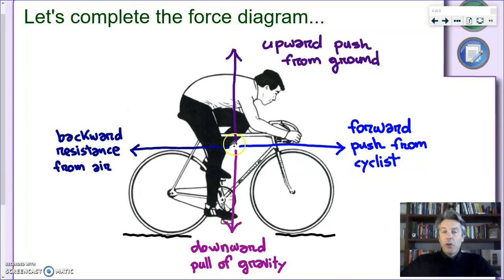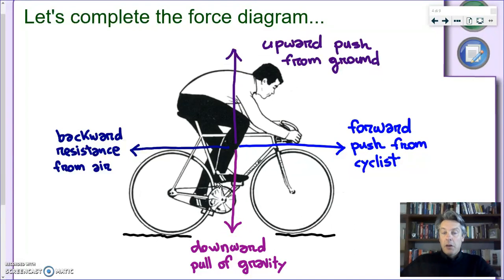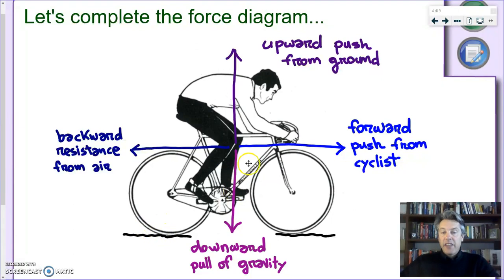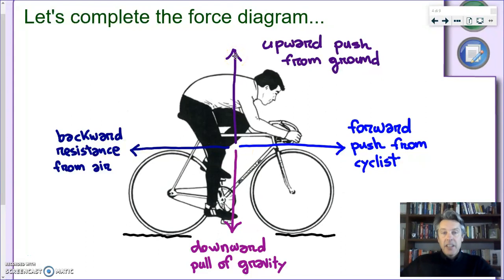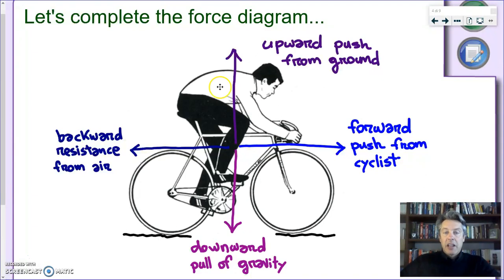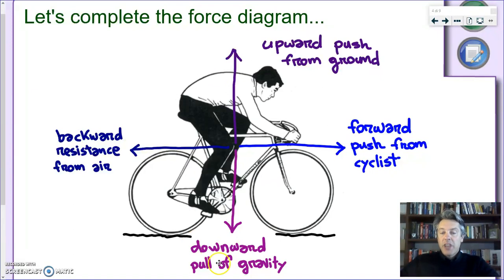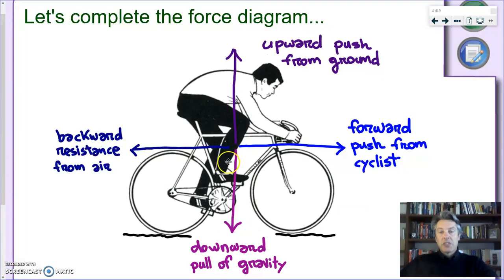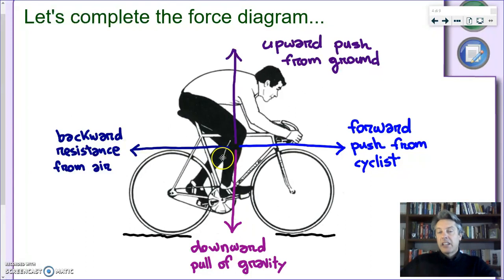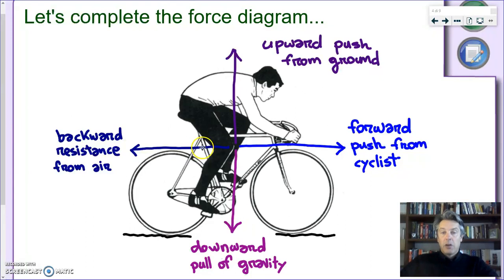So we have this arrow starting from the cyclist and pointing down. The second force is the force from the ground. We always forget about this force. Even when we're standing, there's always a force which is pushing upwards. Otherwise, we will be sinking into the ground. Imagine what would happen if this force was not there. The cyclist would go down. So there's always an upward force opposing the pull of gravity. These two forces are balanced. If this was not the case, the cyclist will either go down, sinking in the ground, or flying up in the air.